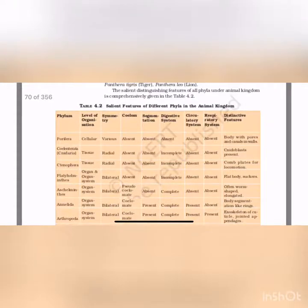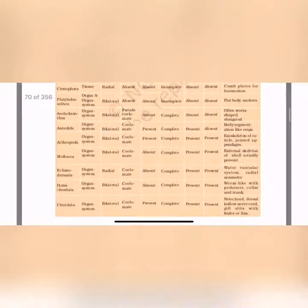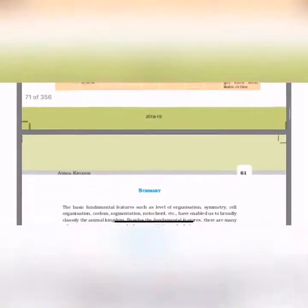Let's review the salient features of the animal kingdom in a comparison table. The columns include: phylum, level of organization, symmetry, coelum, segmentation, digestive system, circulatory system, respiratory system and distinctive features.